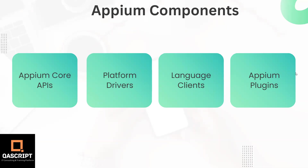We already know that we can build APM automation using different programming languages, and this is possible using the language clients. It could be .NET, Java, Python, or any other language, for which we require a client-side library using which we can develop different tests for automation of different mobile apps. Finally, APM also has different plugins which can help you with different tasks you want to automate on different apps.